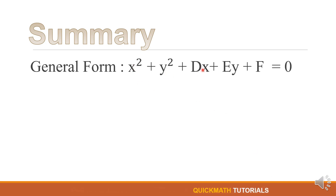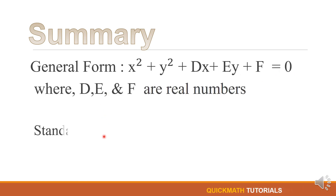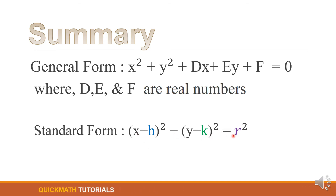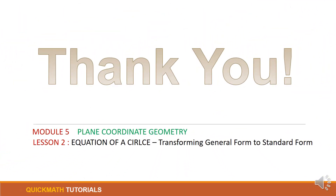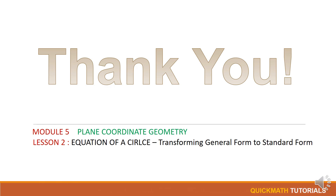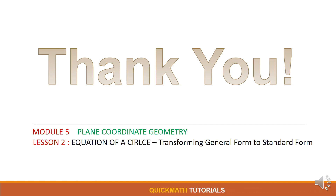To sum it up, the general form of the equation of a circle is x² + y² + dx + ey + f = 0, and for the standard form we have (x - h)² + (y - k)² = r². That ends our Quick Math Tutorial. If you like the video please click the like button, if you have questions just leave a comment below, and to be notified of my next videos please click the subscribe button. Thank you, bye!